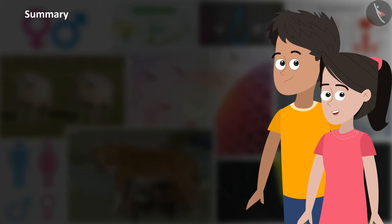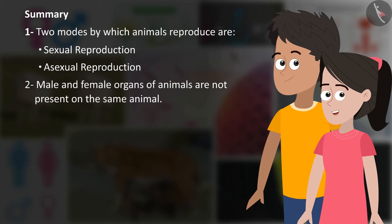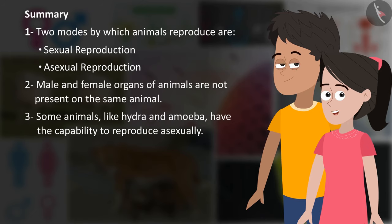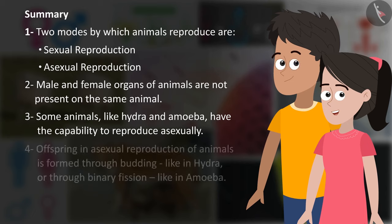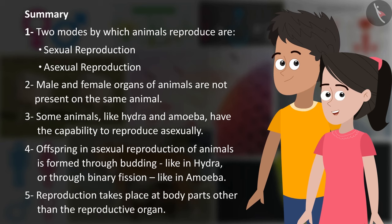Let us summarise our learning. Two modes by which animals reproduce are sexual reproduction and asexual reproduction. Male and female organs of animals are not present on the same animal. Some animals like hydra and amoeba have the capability to reproduce asexually. Offspring in asexual reproduction of animals is formed through budding like in hydra, or through binary fission like in amoeba. Reproduction takes place at body parts other than the reproductive organ.